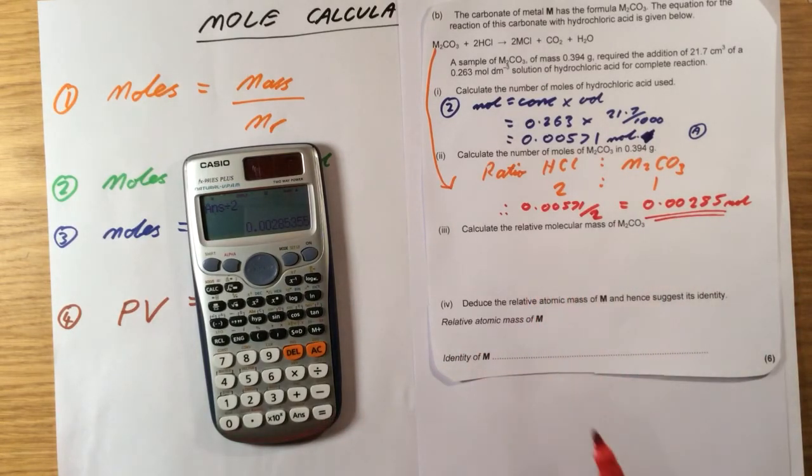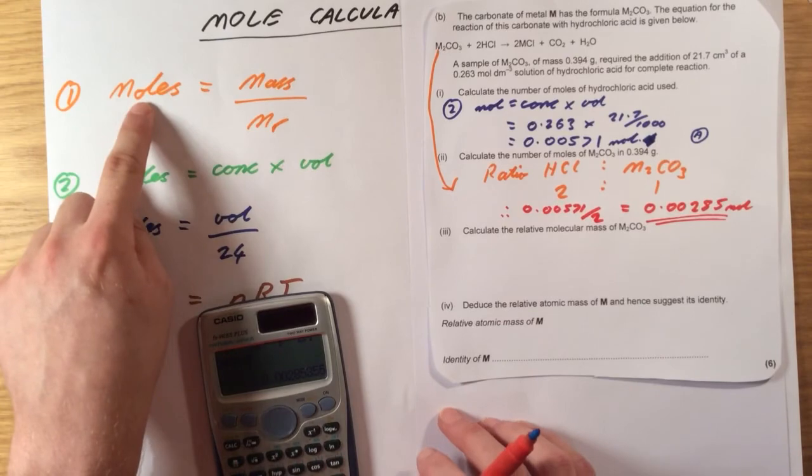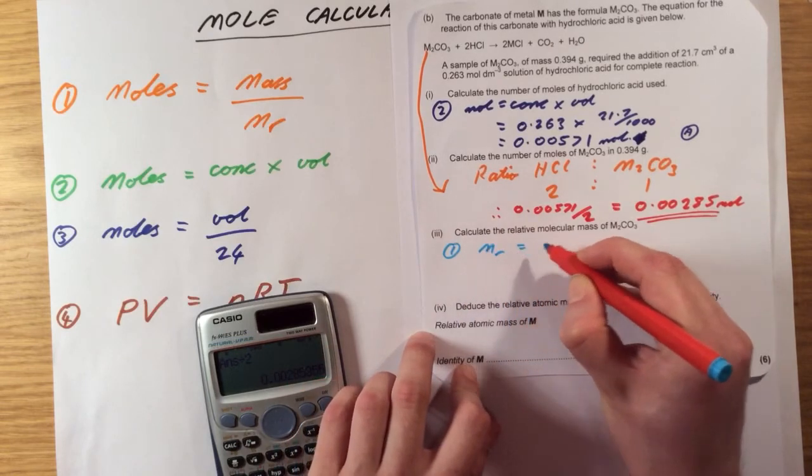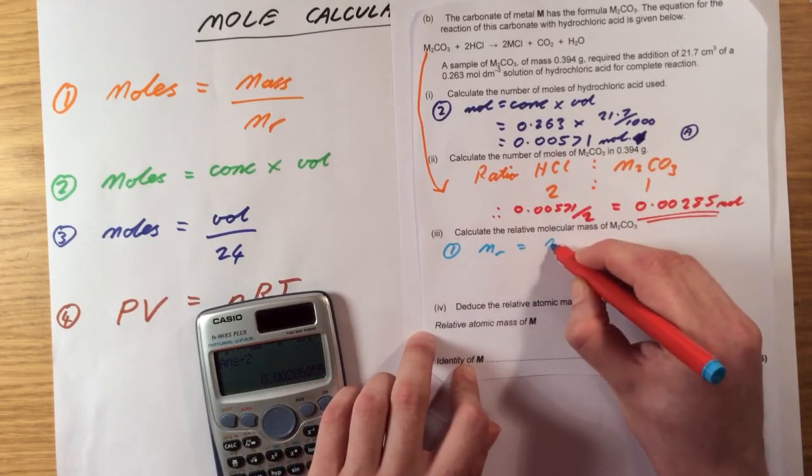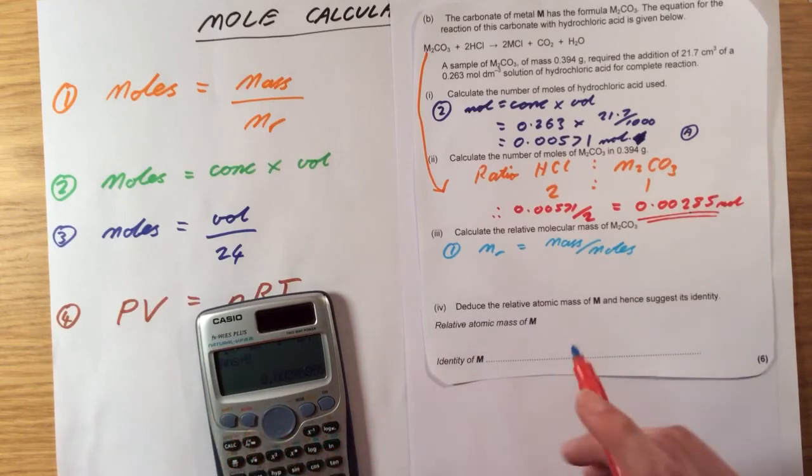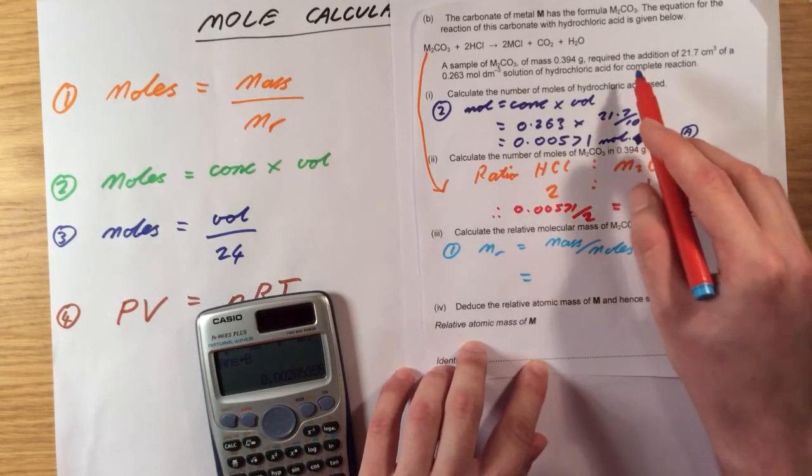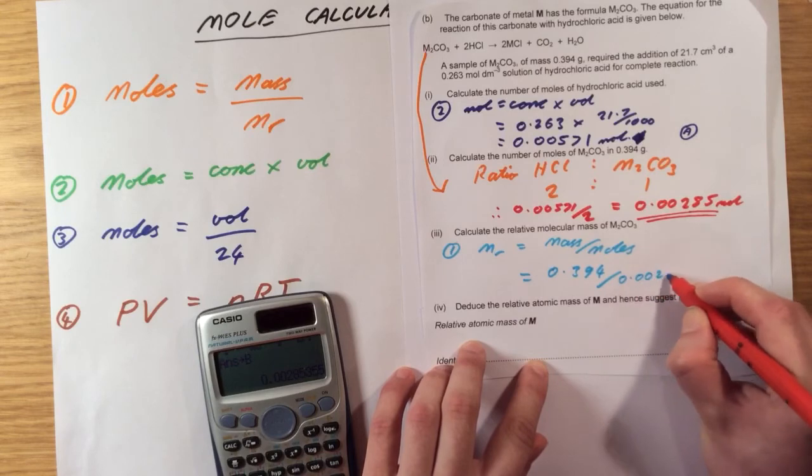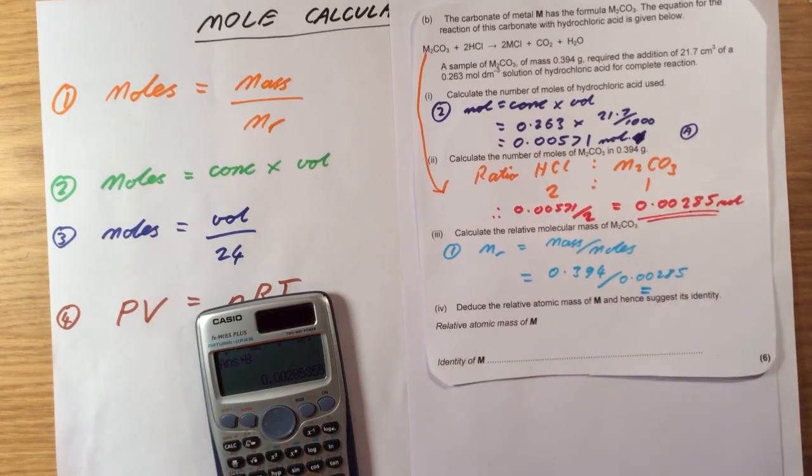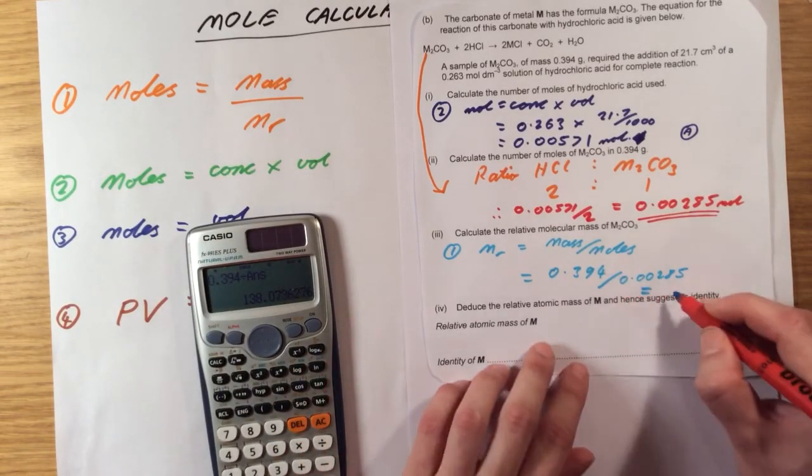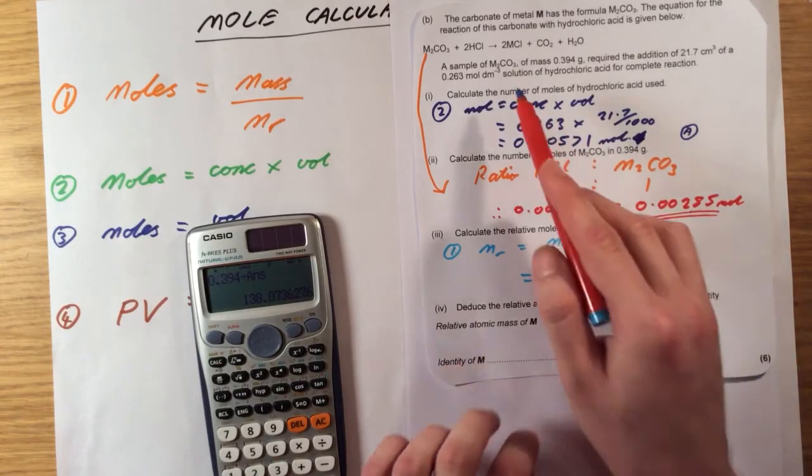Next one, calculate the relative formula mass, that's the MR of M2CO3. Okay, so finally now I've got the number of moles of my carbonate. Therefore, I can work out the MR now. So this is going to be using equation one and rearranging it to have MR equals mass divided by moles. Okay, I've already got it in my calculator. In fact, I'm going to store it as B, just in case I lose it. Okay, the mass I was told is 0.394 divided by 0.00285, which gives me an answer of 138. So that's the MR of this entire compound.